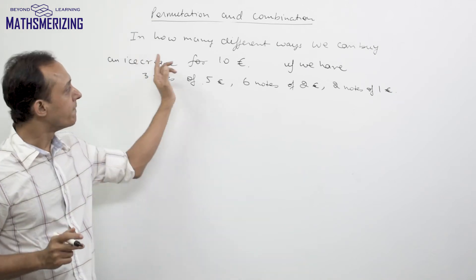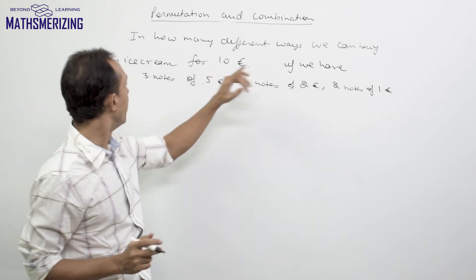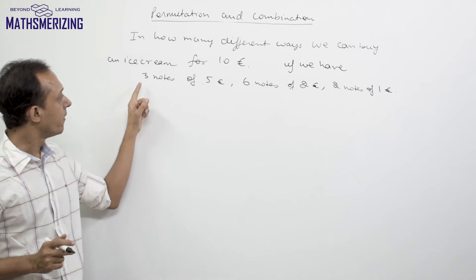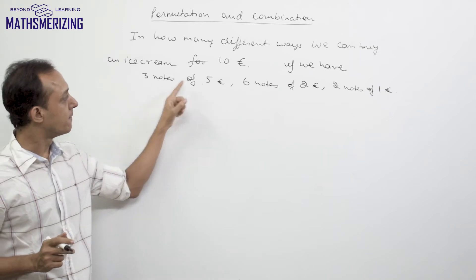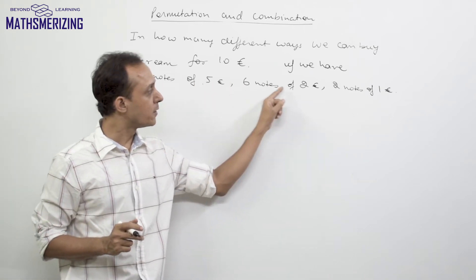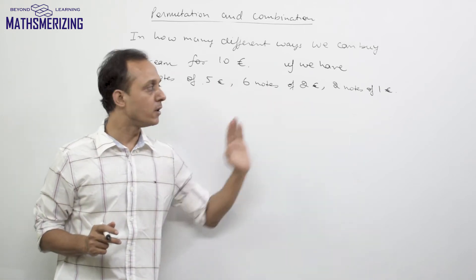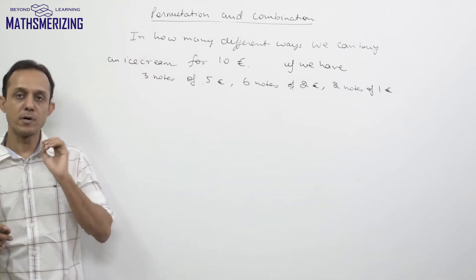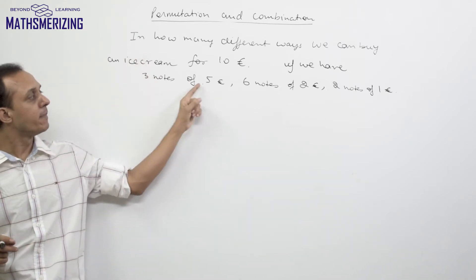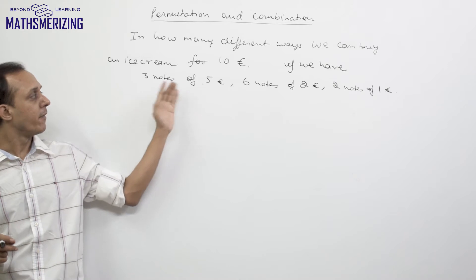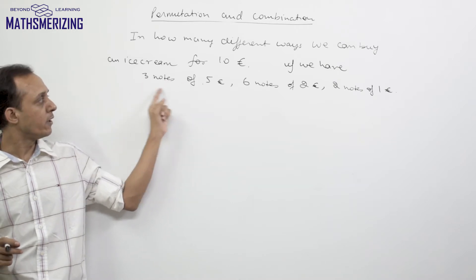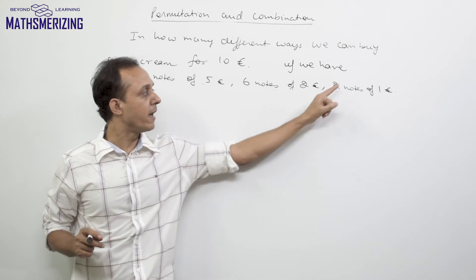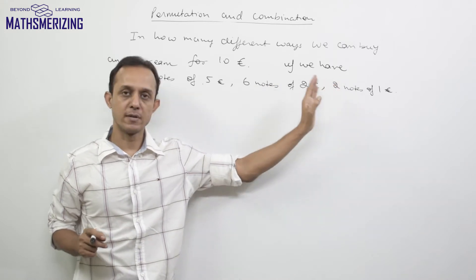The question is: in how many different ways can we buy an ice cream for 10 euros if we have 3 notes of 5 euros, 6 notes of 2 euros, and 2 notes of 1 euro? We also assume that each note of the same denomination is identical — so the 3 five-euro notes are identical, the 6 two-euro notes are identical, and the 2 one-euro notes are identical.